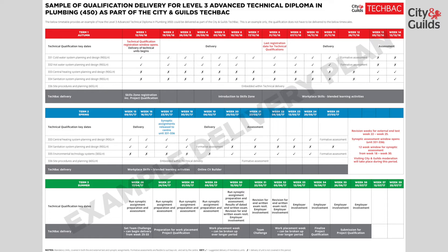In Term 2, we suggest you continue to deliver central heating and sanitation. In week 19, you can complete the sanitation unit and formative assessment to help measure the learning so far. Continue to deliver central heating and introduce the environmental unit, working towards a formative assessment of each module by week 24.